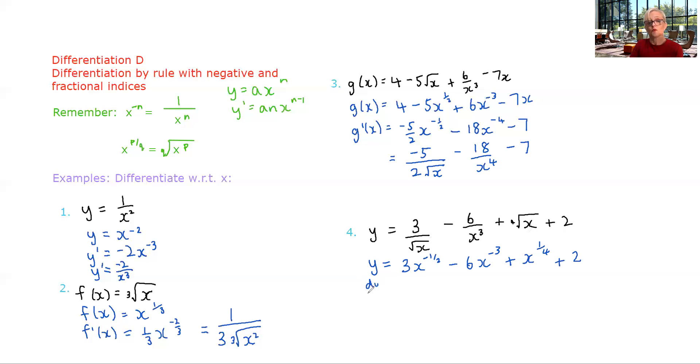So dy to the x or y dash, doesn't matter which way you write it. So three times negative a half is negative three on two. Decrease this by one. Negative a half minus one is negative three on two. Minus six times negative three. So plus 18 x, decrease that by one. Plus a quarter x to the, a quarter minus one is negative three quarters. And derivative of two is nothing.